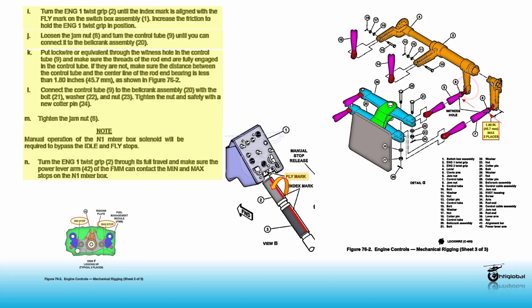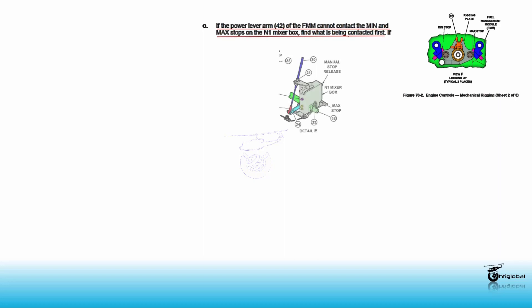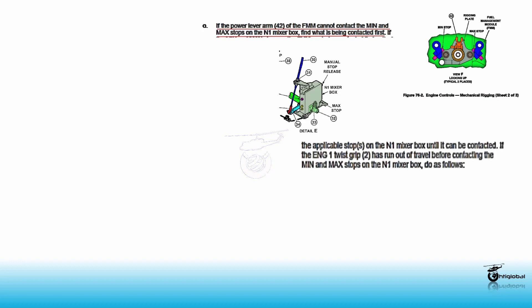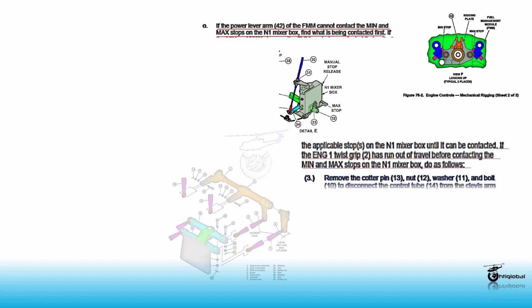If the power lever arm 42 of the FMM cannot contact the MIN and MAX stops on the N1 mixer box, do as follows. Remove the cotter pin 13, nut 12, washer 11, and bolt 14 from the clevis arm 5. Discard the cotter pin.